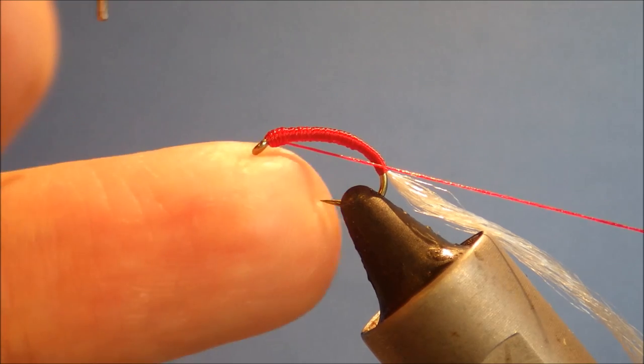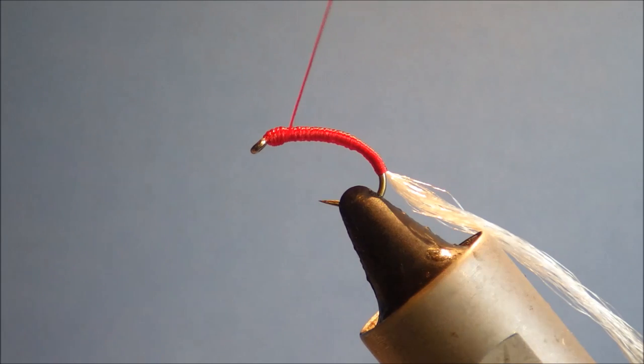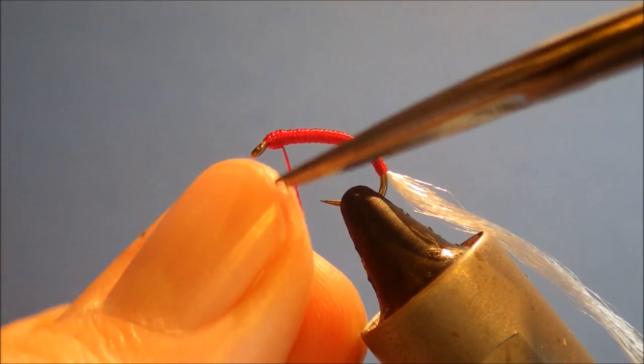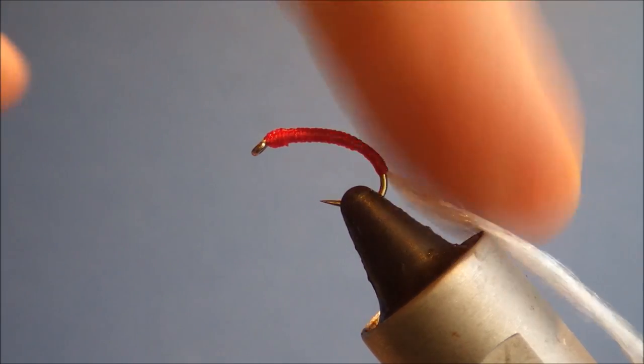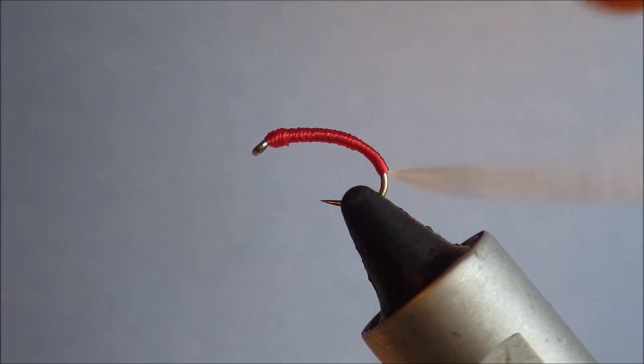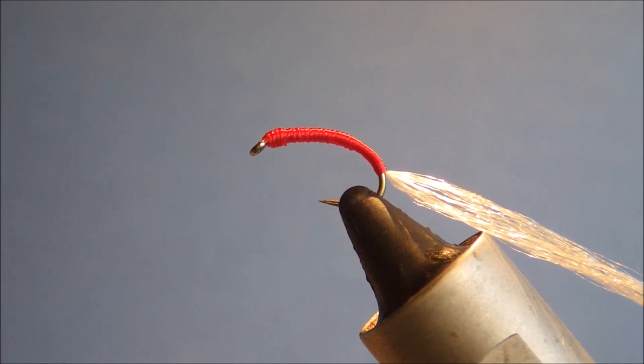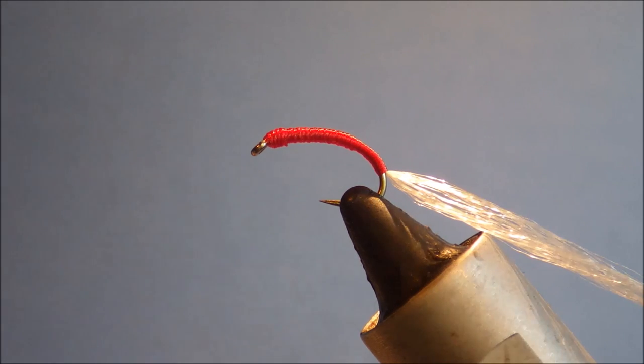Pull that nice and tight. The 210 thread is nice and strong, you can pull on it quite hard. Trim the waste nice and close. I like to leave the floss tied in. I'll trim it when I come to tie my next fly. If you're tying five or whatever, it means you don't lose your floss.